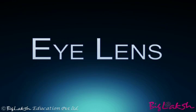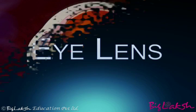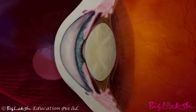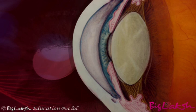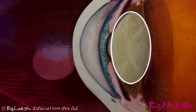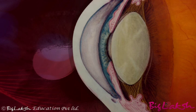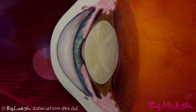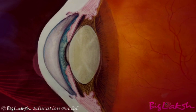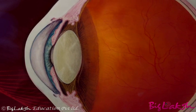Eye Lens. Behind the pupil is a double convex lens called the eye lens. This lens is made of transparent jelly-like proteinaceous material.